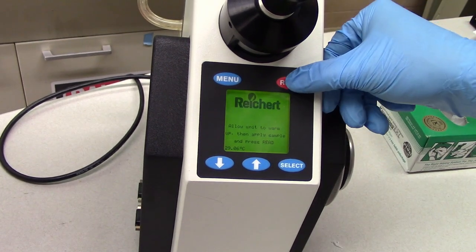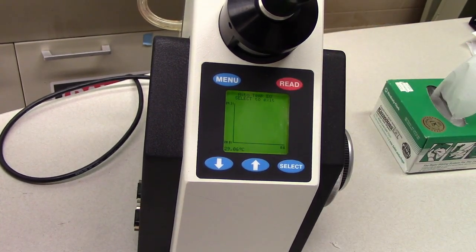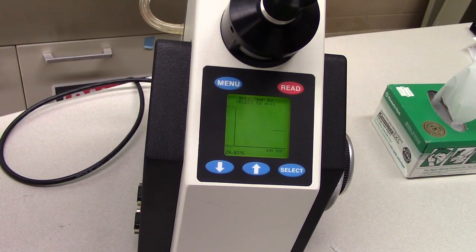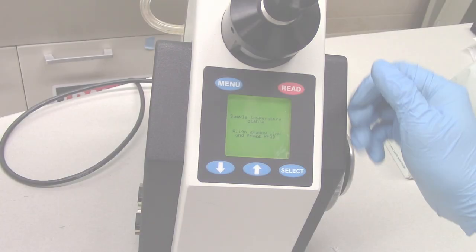Press the Read button and wait for the refractometer to determine that the sample temperature is stable. When prompted, double-check that the border is still aligned with the crosshair, then press Read.